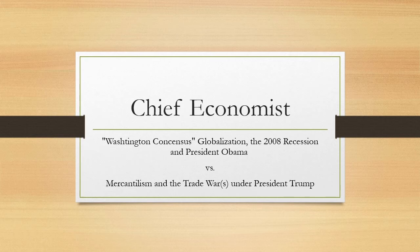Congress passed the Employment Act of 1946, committing the government to the maintenance of maximum employment, production, and purchasing power. This act translated into law the widespread expectation that the government would guarantee to the fullest extent possible a prosperous economy. It also made the president primarily responsible for providing economic policy leadership. The Employment Act created the CEA and an accompanying staff to provide professional analysis and advice, and it required the president to report annually to Congress on the condition of the economy and to offer proposals for improving or maintaining its health.